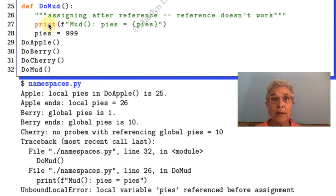Now I take a look at DoMud. We print pies equals pies, and below that we're setting pies equals 999. What pies are we talking about? I don't know. The interpreter doesn't know. We have a reference of pies, but we don't have a global out there. We have an assignment of pies, but we've already done a reference. So it's very confusing, and we get an error. And the error is unbound local error: local variable pies referenced before assignment. I wish it said identifier, but it doesn't. It's a very old piece of Python.